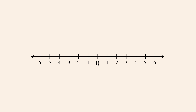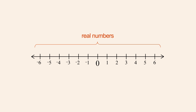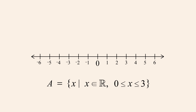The number line represents the set of all real numbers. Every real number has a corresponding point on the number line. As an example, let's use the number line to illustrate set A. As we saw in the previous lecture, in cases where the universal set is obvious from the context, it may be omitted from the set definition.